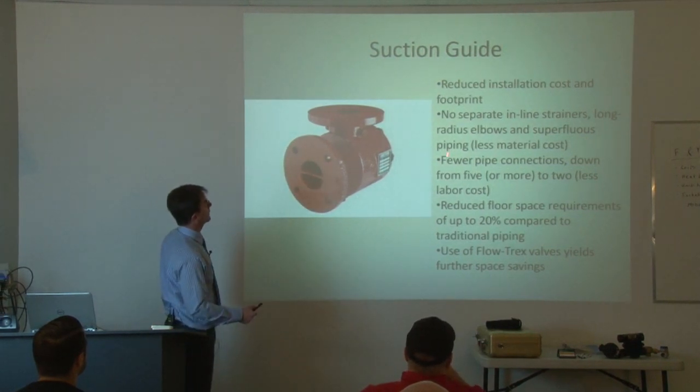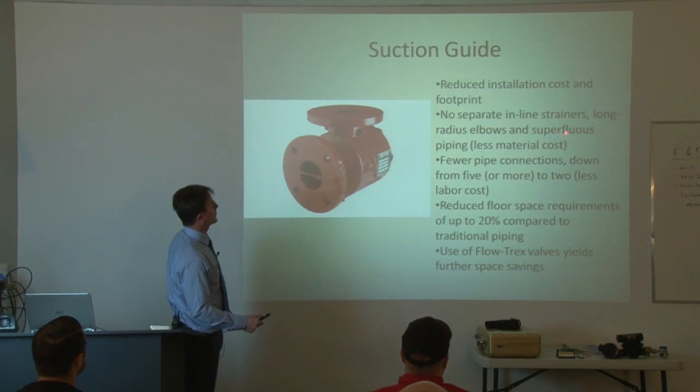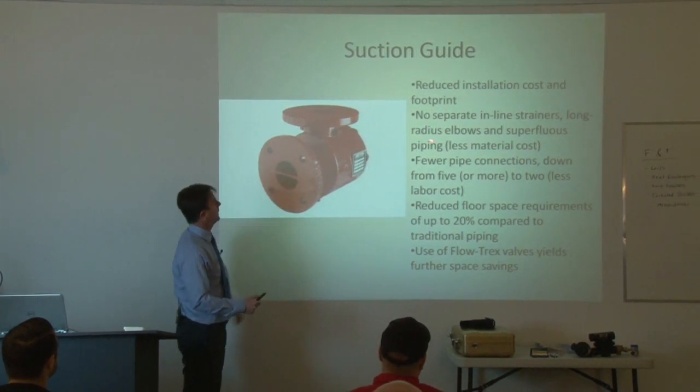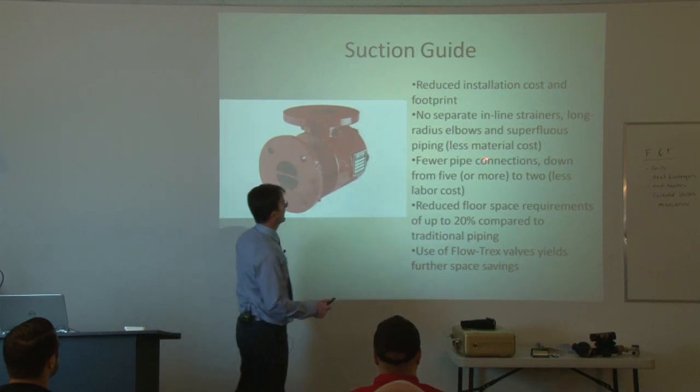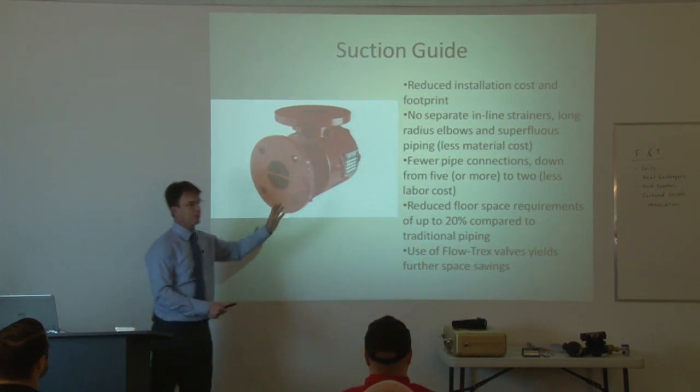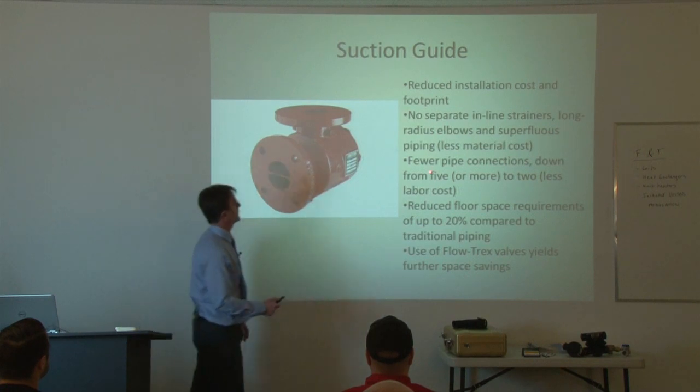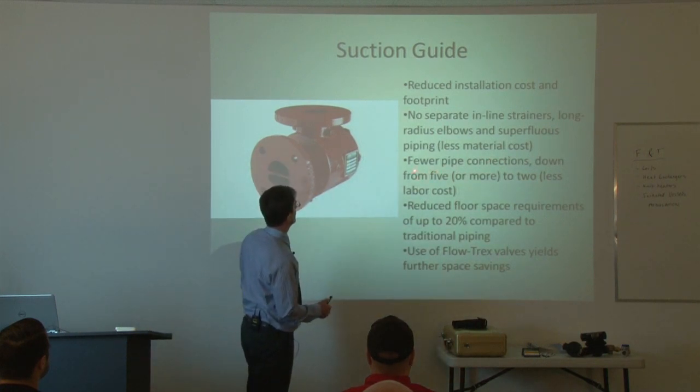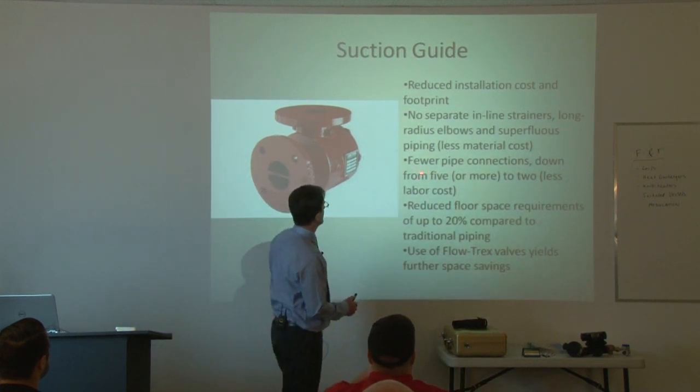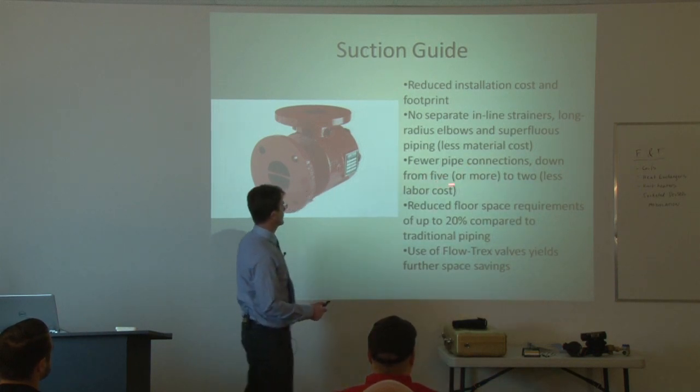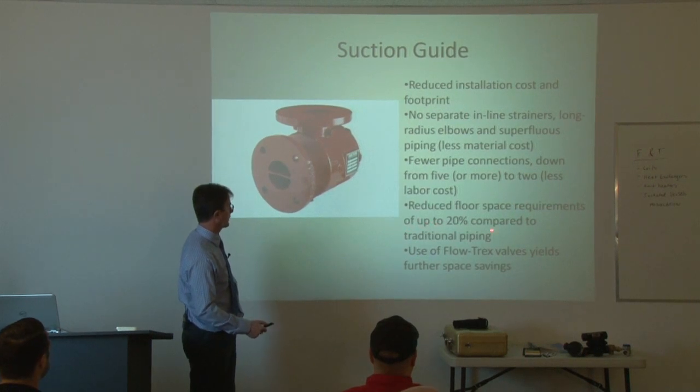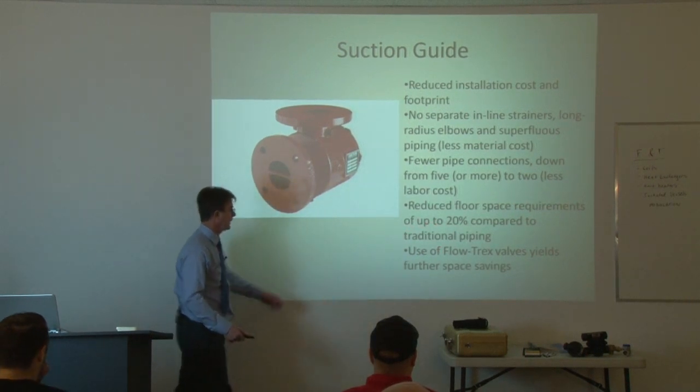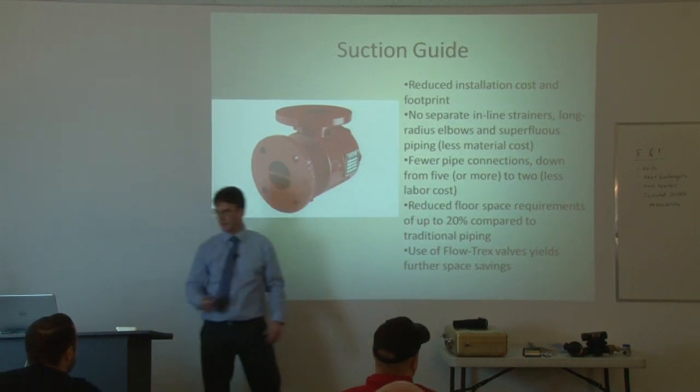So your suction guide, what the suction guide does is reduced installation cost and footprint. No separate inline strainers, because the strainers built right in. Long radius elbows are not required. Superfluous piping is not required. I didn't write that. I got it straight out of their manual. So I don't use words like superfluous. Fewer piping connections down from five or more to two or less. Reduced floor space requirements up to 20% compared to traditional piping.